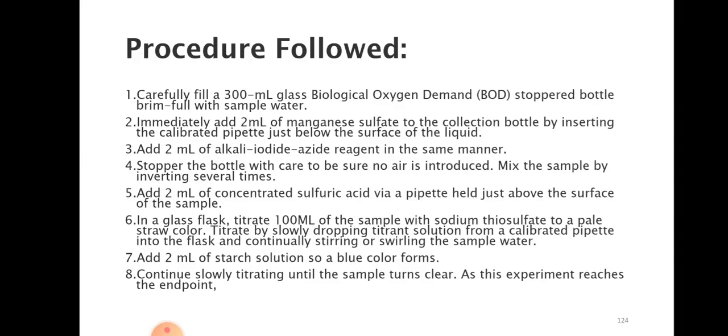First we are going to take a 300 ml BOD stopper bottle. This is a special type of stopper bottle we are using. In this we are going to fill 300 ml of water. In this water we are going to put 2 ml of manganese sulfate below the surface of liquid. Then after we are going to add 2 ml of alkali iodine azide reagent. And we will keep a stopper on this bottle. We will mix it properly and keep it under dark for 15 minutes.